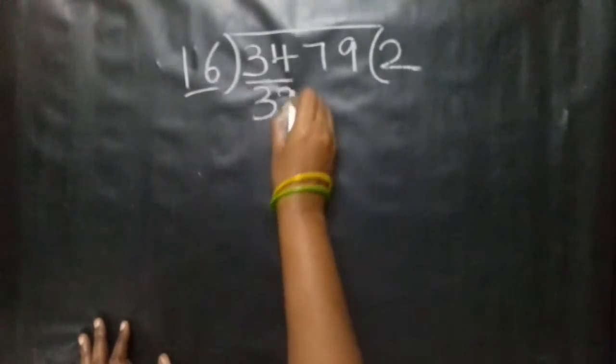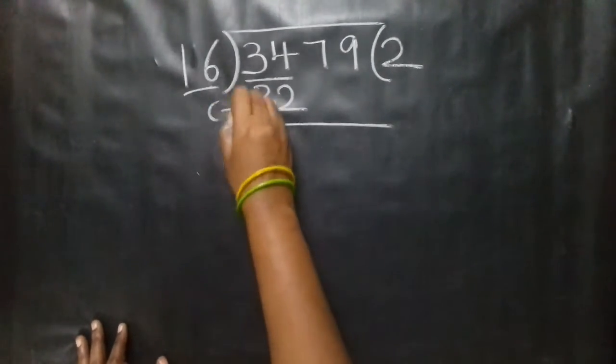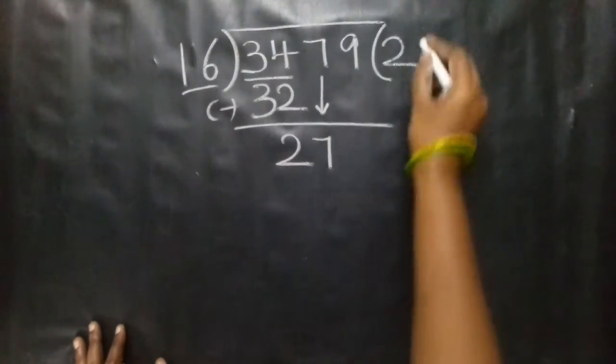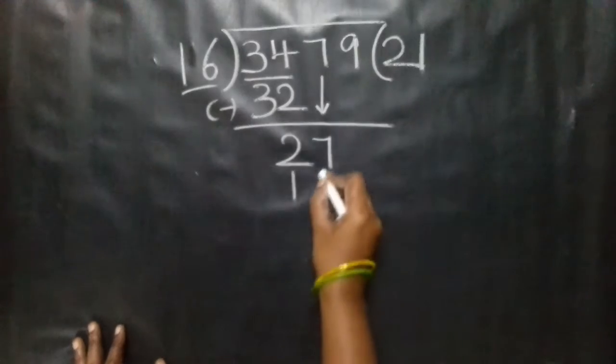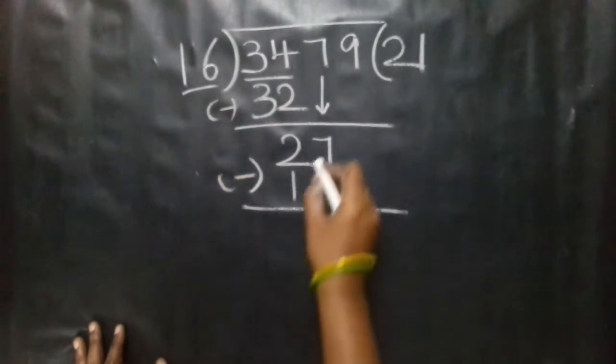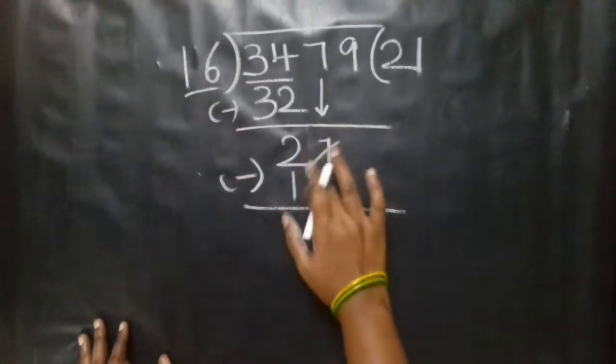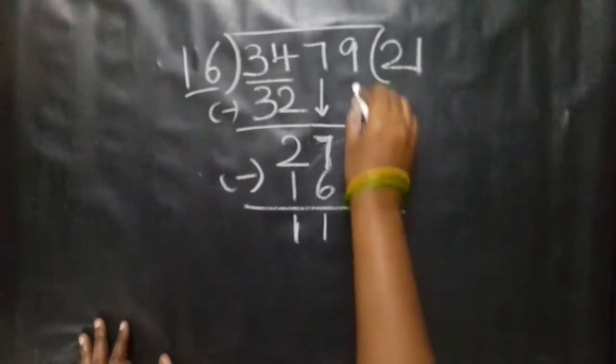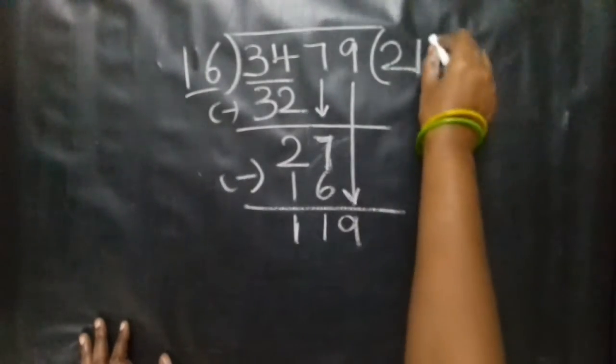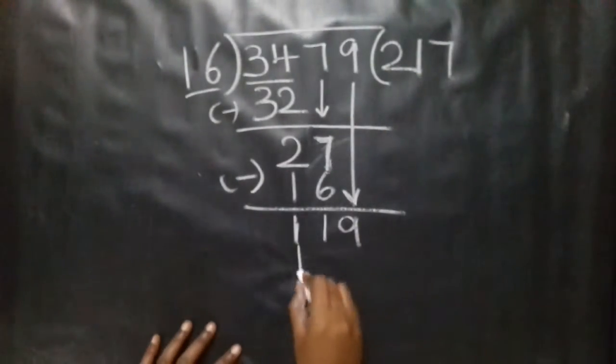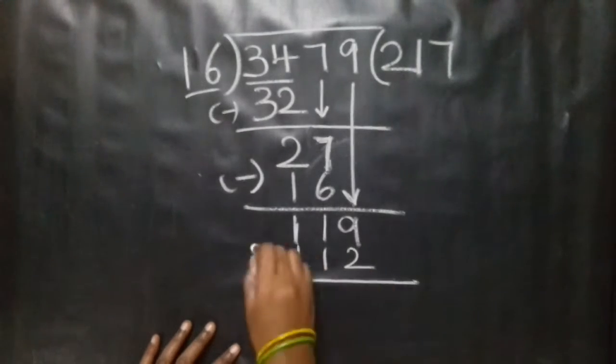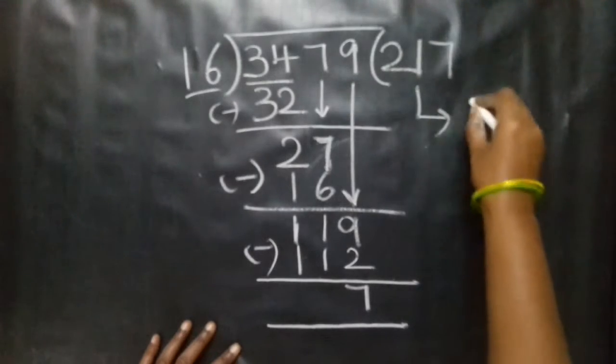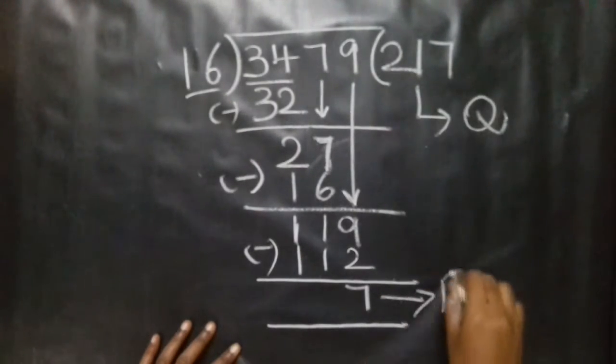Looking at this 2-digit number, 2 times 16 is 32. Subtract to get 2, bring down 7 to get 27. How many times does 16 go into 27? 1 time, which is 16. Subtract: 27 minus 16 equals 11. Bring down 9 to get 119. 7 times 16 is 112. Subtract: 119 minus 112 equals 7. So this gives quotient 217, remainder 7.